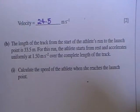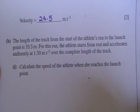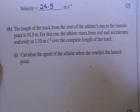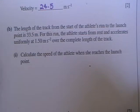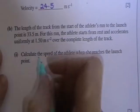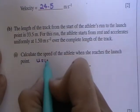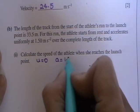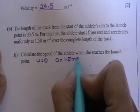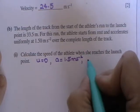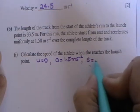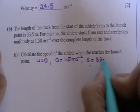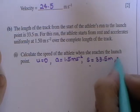The next question is about an athlete. The length of the track from the start of the athlete's run to the launch point is 33.5 metres. For this run, the athlete starts from rest, so U equals 0. Accelerates uniformly at 1.5 metres per second squared. You know the length is 33.5 metres, and you're asked for V.